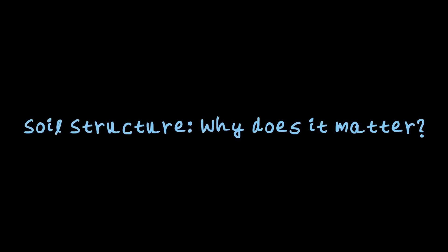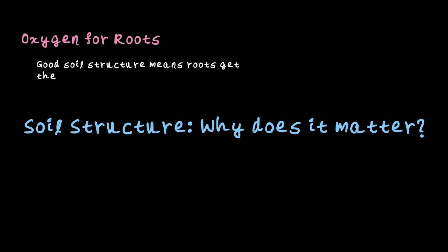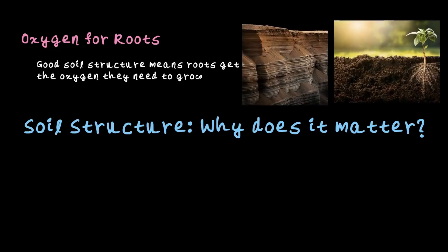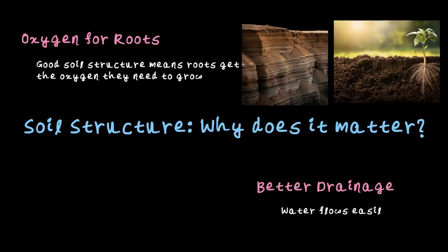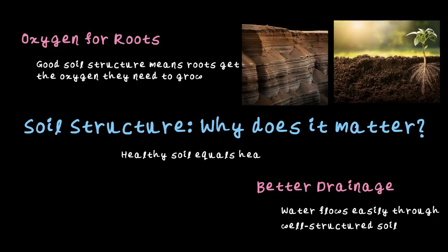Why does soil structure matter? It can literally make or break how plants thrive. First, oxygen for roots — good soil structure means there is enough space for air to move, giving plants the oxygen they need to grow. Without it, roots can struggle and so will the plants. Next, better drainage — well-structured soil allows water to flow easily, preventing waterlogging and helping plants absorb just the right amount of moisture. In short, healthy soil equals healthy plants.